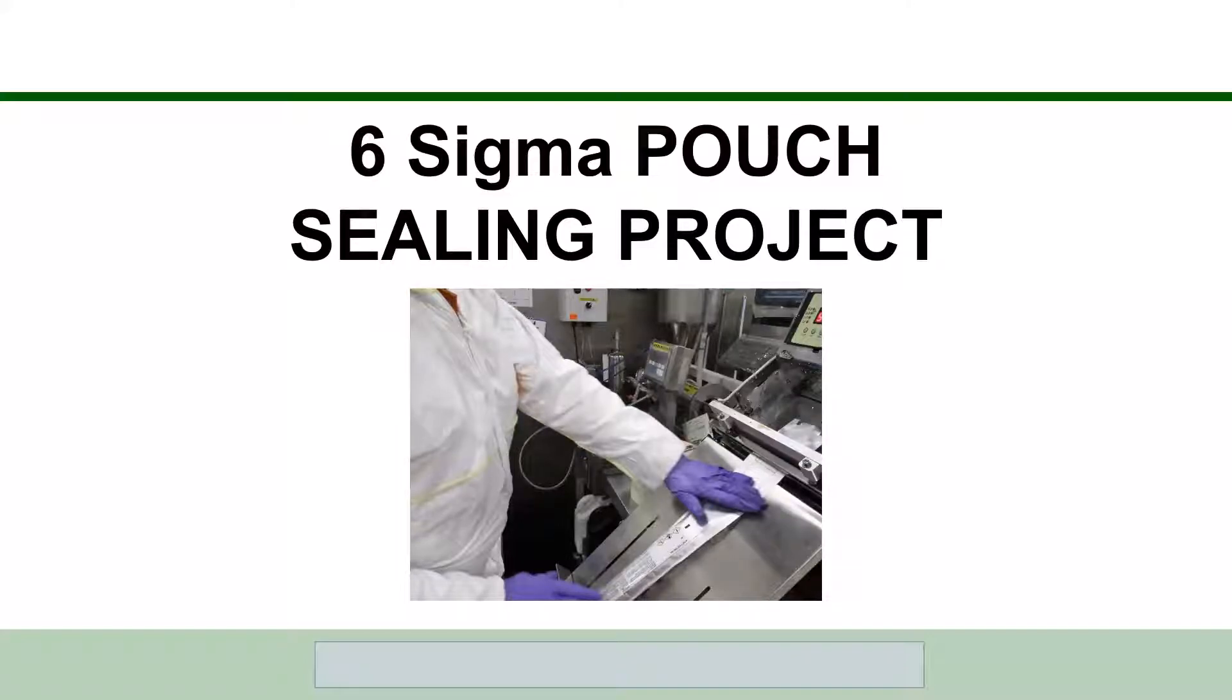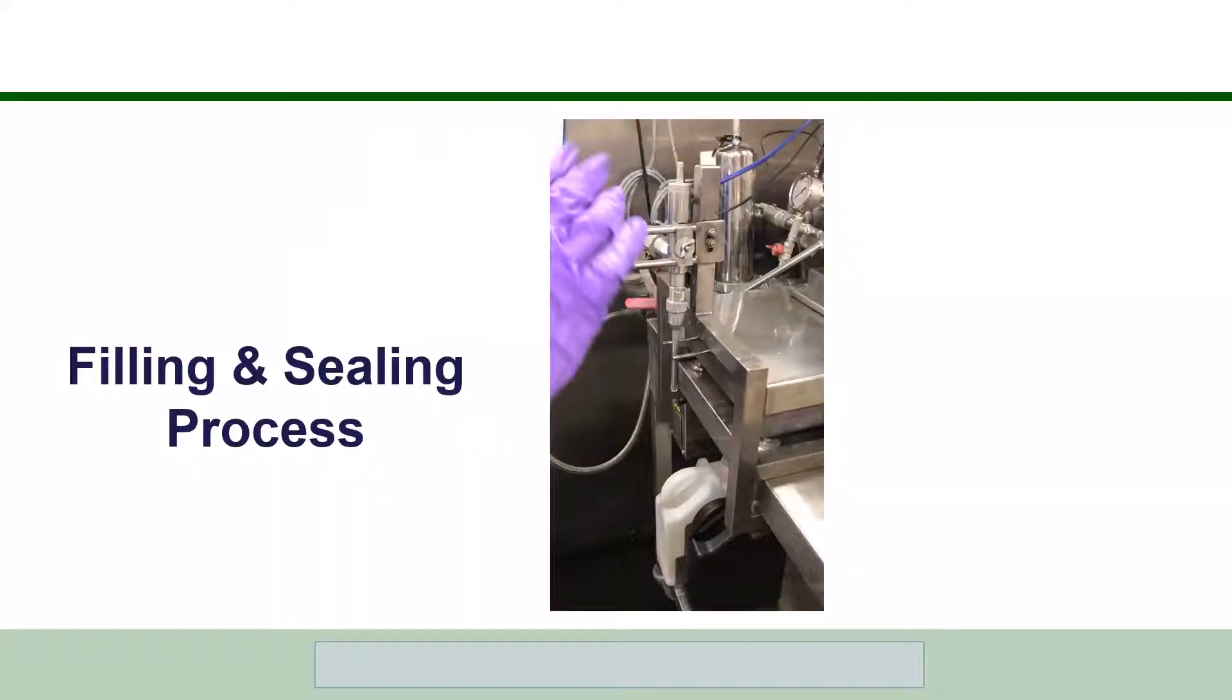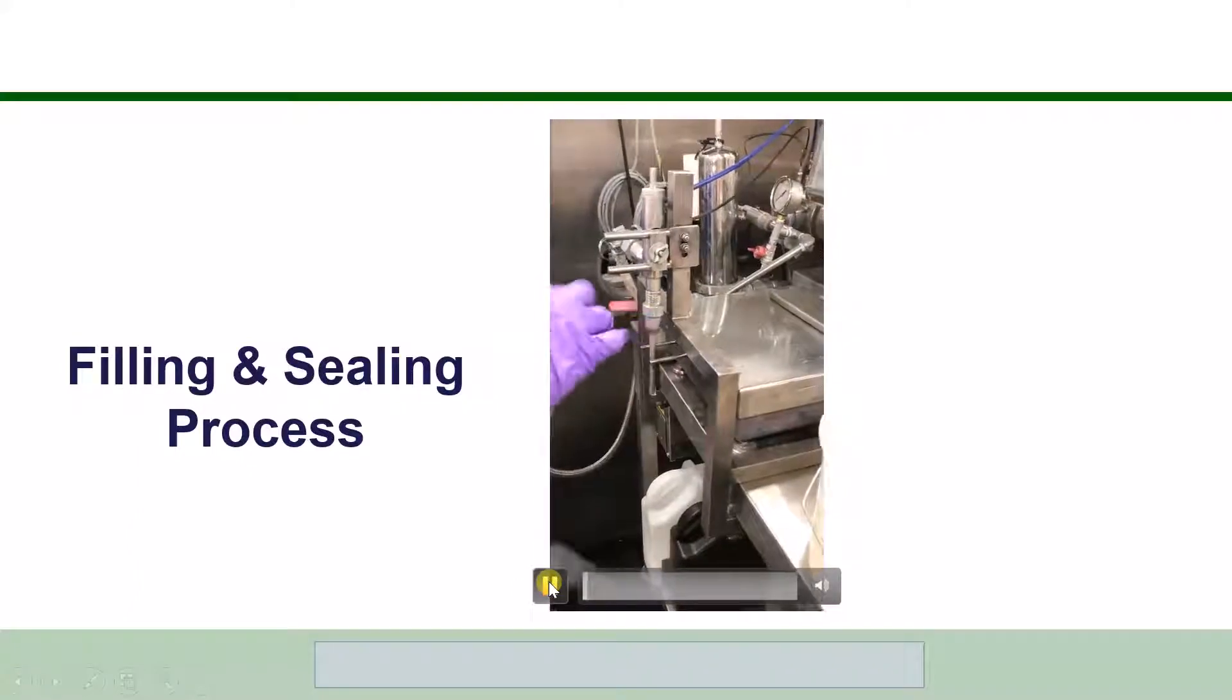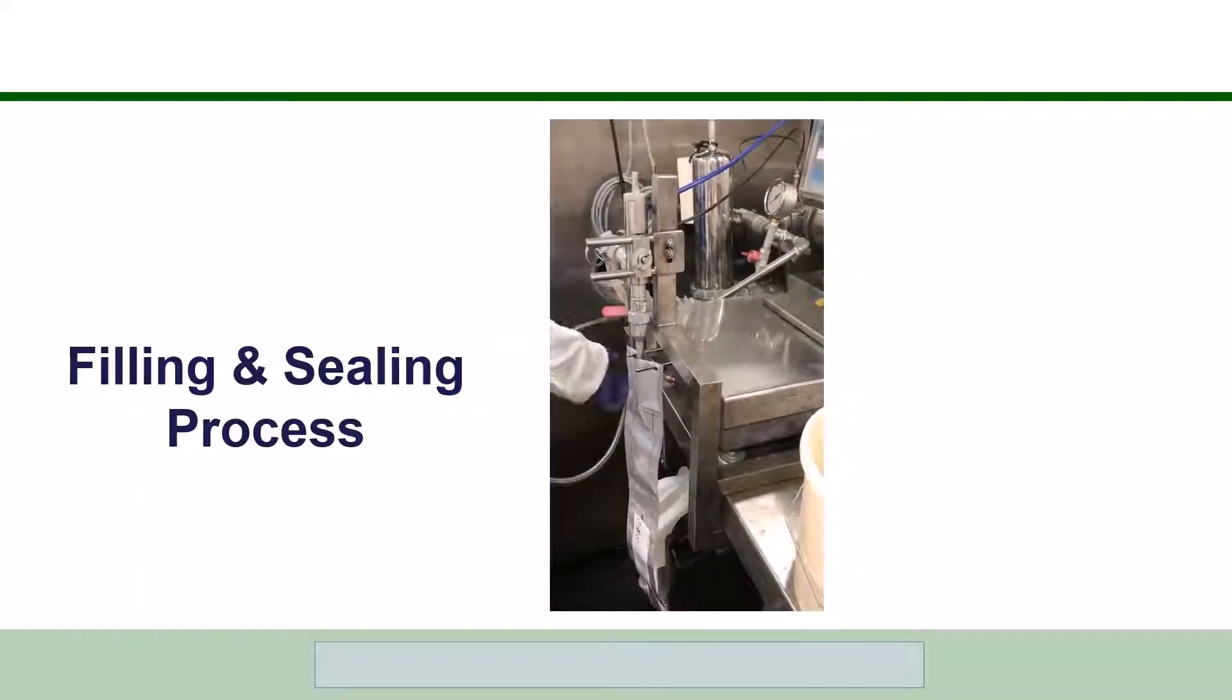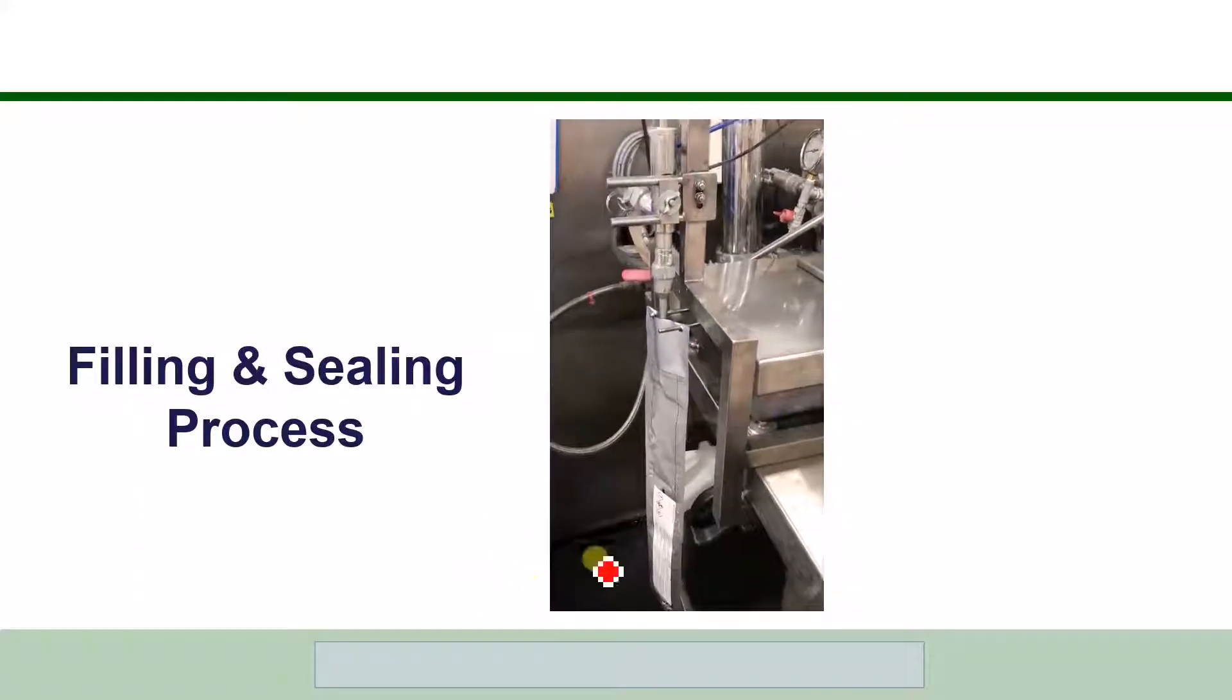It's a pouch sealing process. You can see the pouch just being heat-sealed there - there's a heating element that seals across there, and the problem is that the pouch isn't sealing correctly. You'll see that the pouch is being filled with a liquid, then the pouch gets put on the sealing machine and there's a little bit of heat, time and temperature.